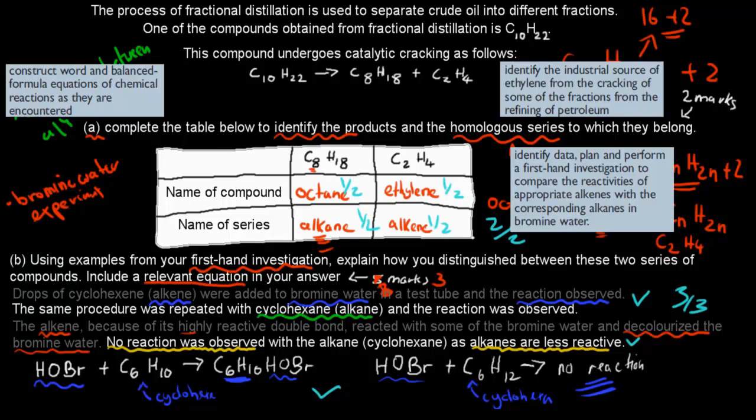And where did those questions come from? They come from these dot points. So first, we obviously said we have to construct word and balanced formula equations as they are encountered. So this was, they can ask us to put down an equation, because there was a dot point that said we have to. And then it was identify an industrial source of cracking ethylene from the cracking of some of the fractions from petroleum.